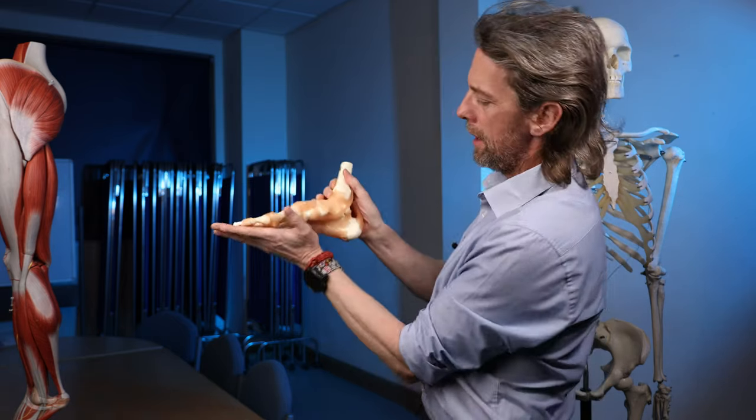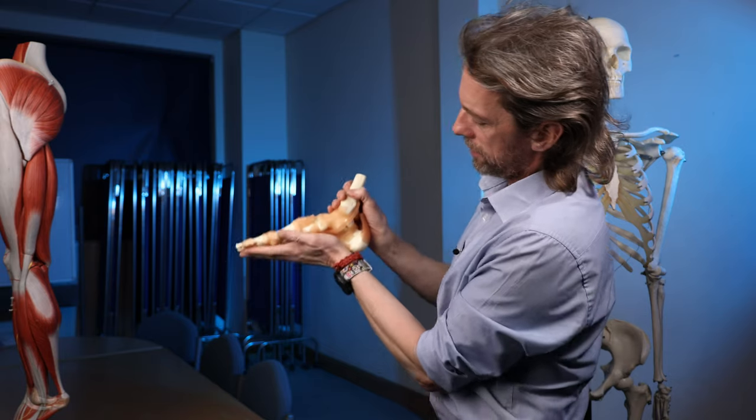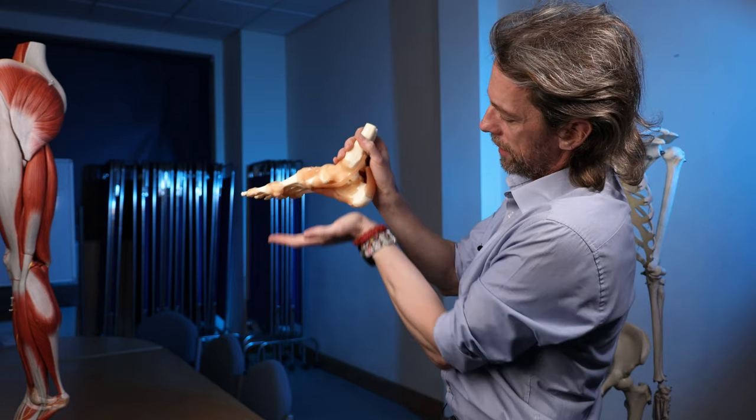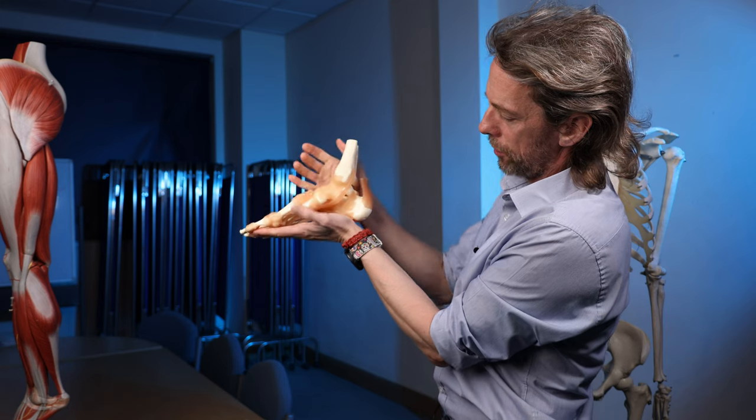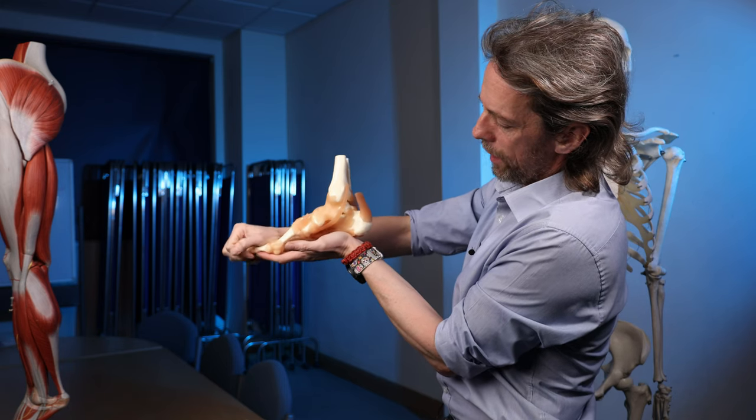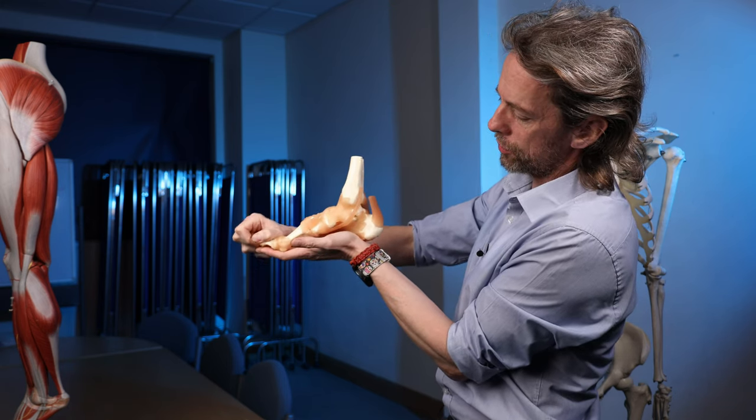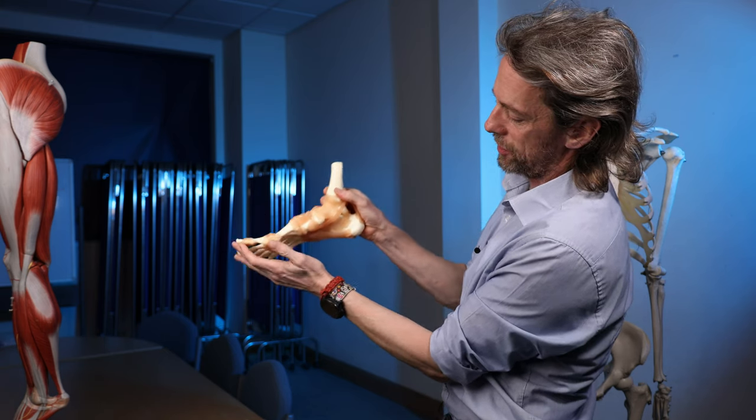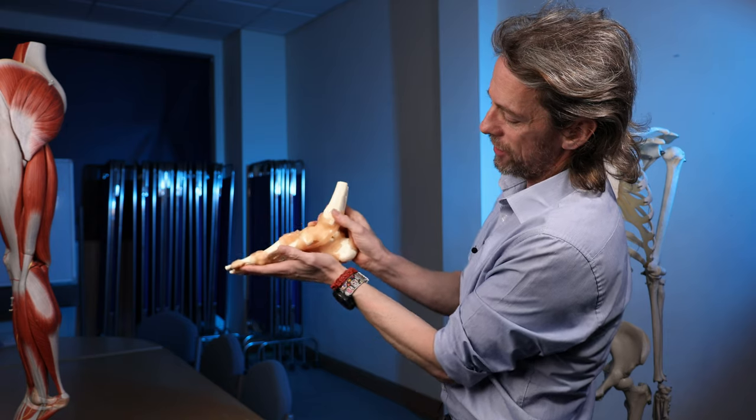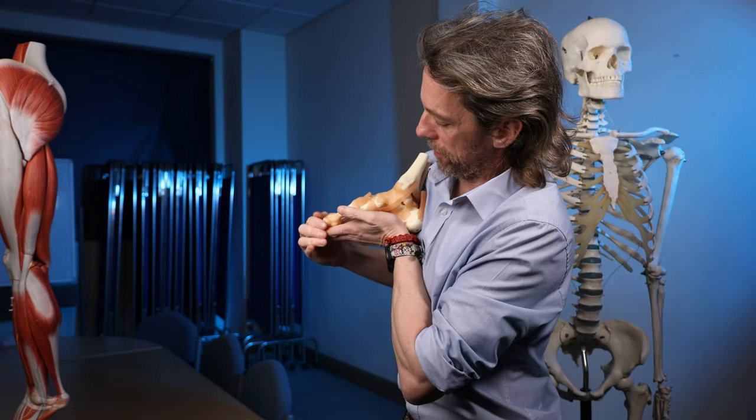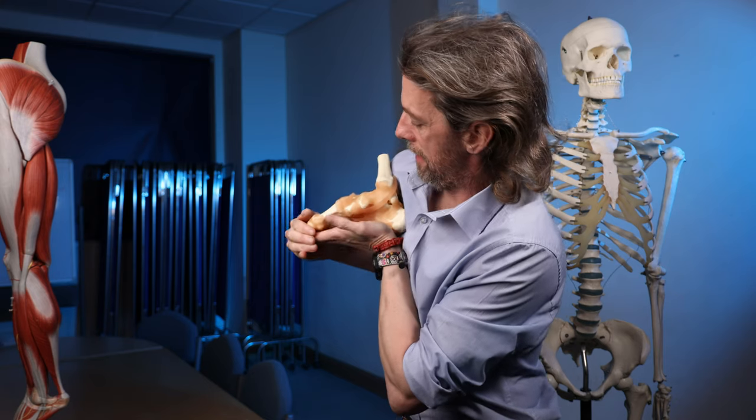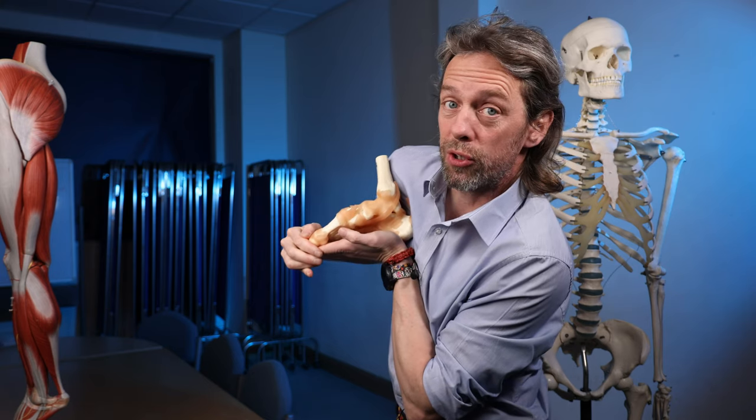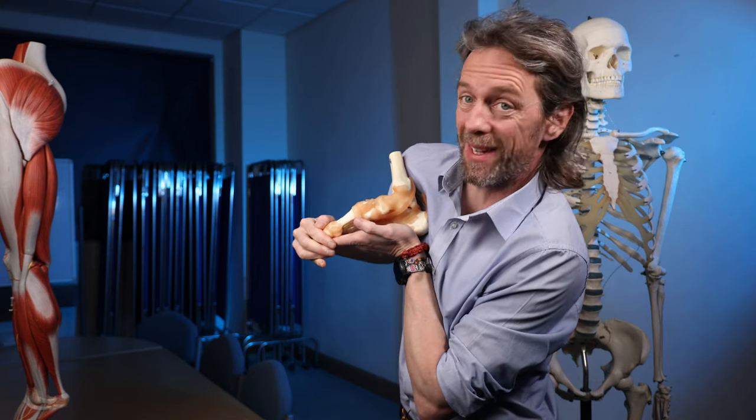Now because the plantar aponeurosis is running from the calcaneus through to the toes, that means that when you dorsiflex the toes, when the toes are moved like that, the plantar aponeurosis is stretched. And by putting tension in the plantar aponeurosis, one of the things that happens is that the longitudinal arch of the foot is raised.